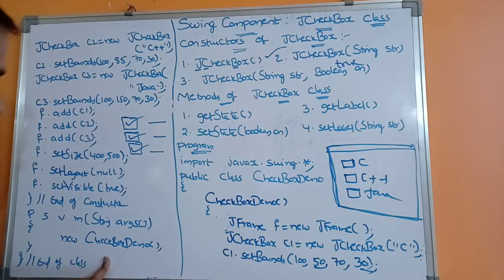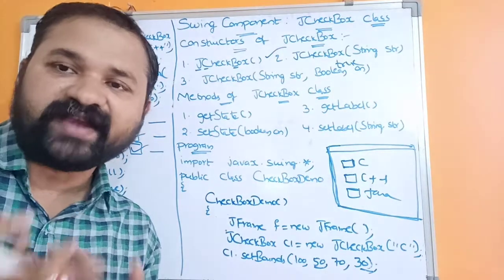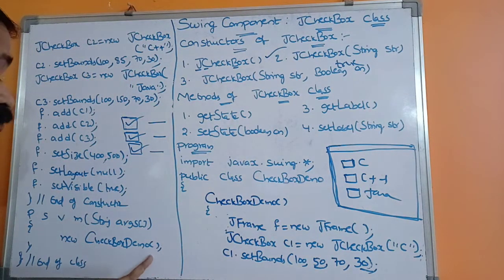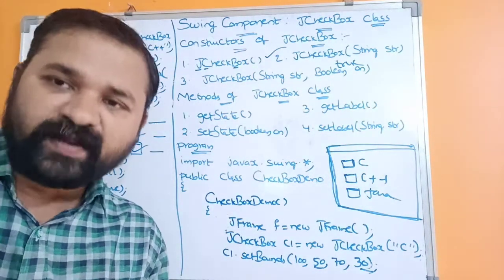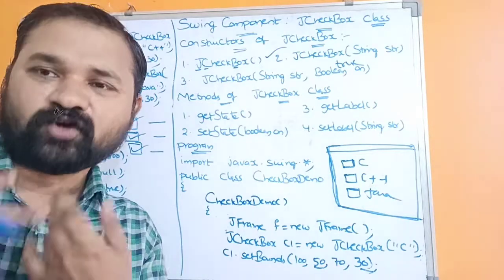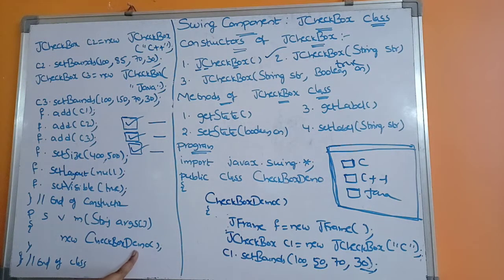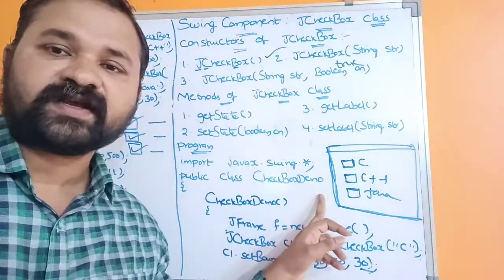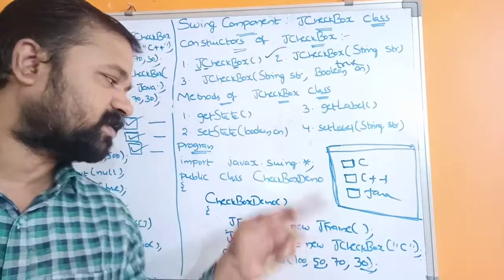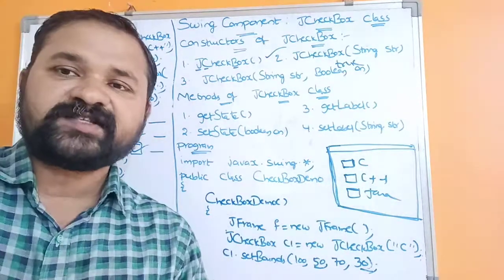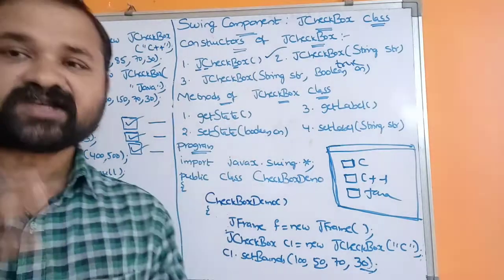This ends the constructor. Next, the main method is declared: public static void main(String[] args). Inside the main method, we create an object of the class: new CheckboxDemo(). There is no need for a reference variable, but you can create one if you want. Whenever this object is created, the constructor gets called. We then compile with: javac CheckboxDemo.java and run with: java CheckboxDemo. The output is a frame displaying the three checkboxes — this demonstrates the JCheckbox component in Swing.